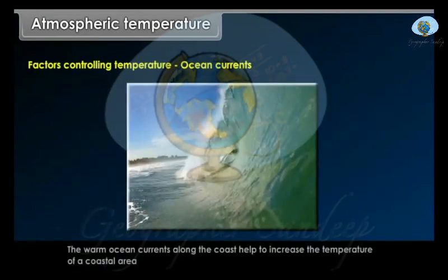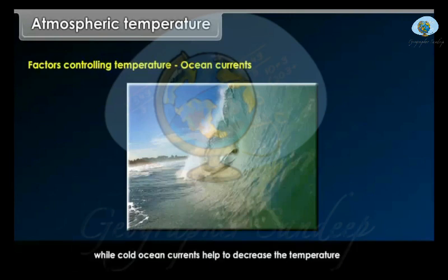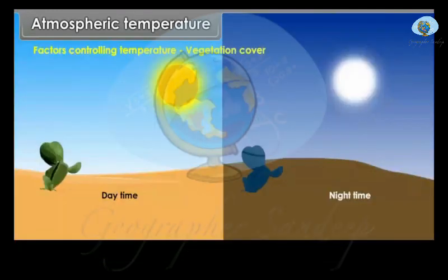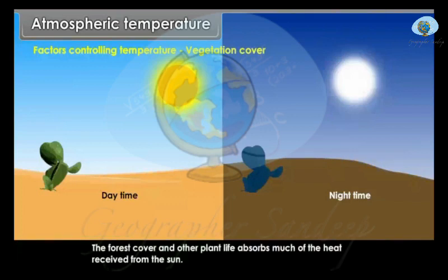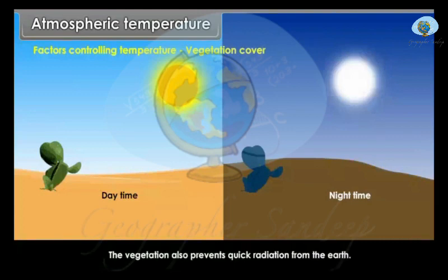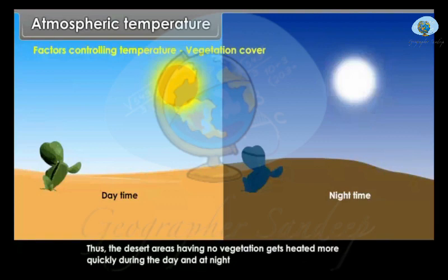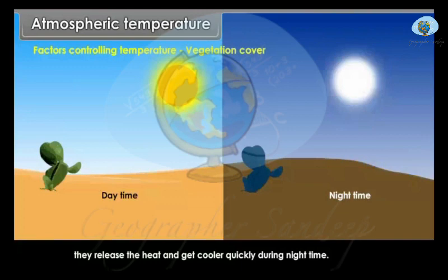Ocean Currents: Warm ocean currents along the coast help to increase the temperature of a coastal area, while cold ocean currents help to decrease it. Vegetation Cover: Forest cover and other plant life absorbs much of the heat received from the sun. Vegetation also prevents quick radiation from the earth. Thus, desert areas having no vegetation get heated more quickly during the day and release the heat and get cooler quickly during the night time.